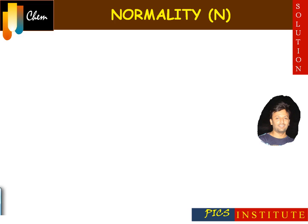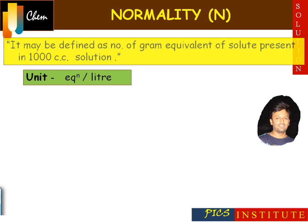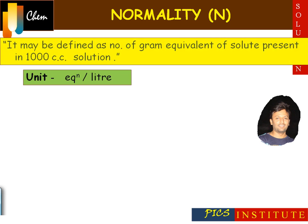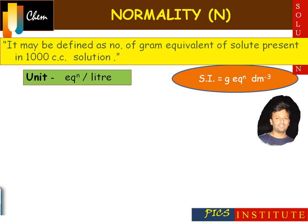Now let us understand normality. The units of normality are equivalents per litre or gram equivalents per litre. Its definition: normality may be defined as the number of gram equivalents of solute present in 1000 cc or 1 litre of solution. Its SI units are gram equivalents per decimetre cubed.